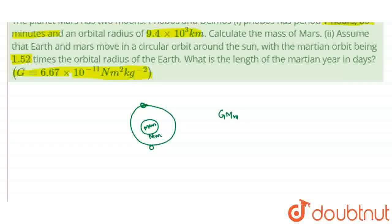We have Mm = 4 × (3.14)² × (9.4 × 10⁶)³ divided by 6.67 × 10 to the power minus 11, and T is 459 × 60, squared. After solving this, the value of Mm — the mass of Mars — comes out to be 6.48 into 10 to the power 23 kilogram. This is the answer to the first part: this is the mass of Mars.